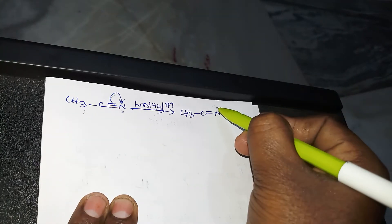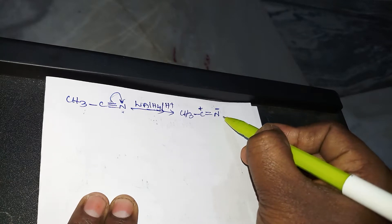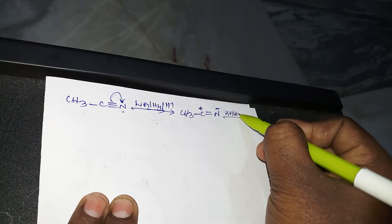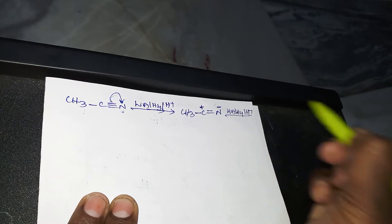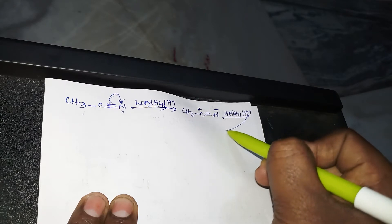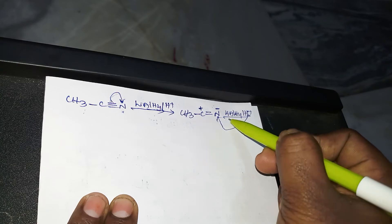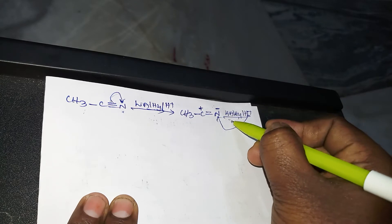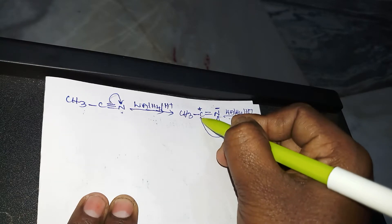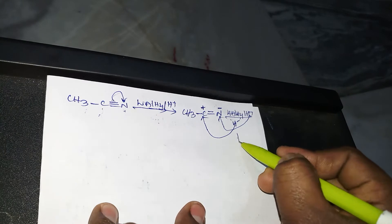Now here nitrogen has a negative charge and carbon has a positive charge. In the presence of lithium aluminum hydride, H+ attacks the negative charge side, and lithium aluminum hydride — having H minus — sends H minus to the positive charge side.